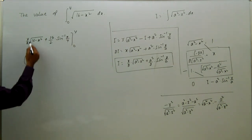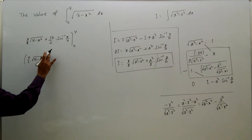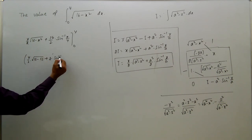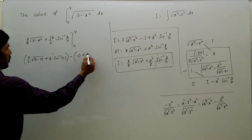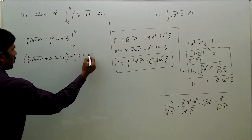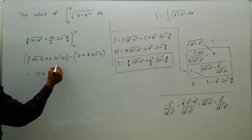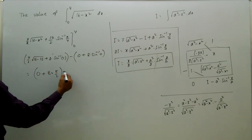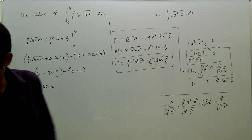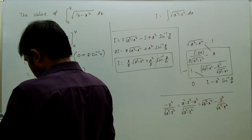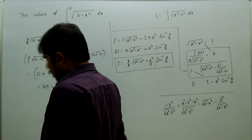Applying the limits 0 to 4: at x equals 4, we get 4 by 2 times root of 16 minus 16 plus 8 times sin inverse 1. Applying x equals 0 gives 0 plus 8 times sin inverse 0. So the result is 8 times sin inverse 1 which is pi by 2, minus 0. That equals 4 pi, which is approximately 12.57.